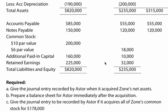What's required here is these three things: we're going to give the journal entry recorded by Aster when it acquired Zone's net assets, we're going to prepare a balance sheet for Aster immediately after the acquisition, and we're going to give the journal entry to be recorded by Aster if it acquires all of Zone's common stock for $178,000.